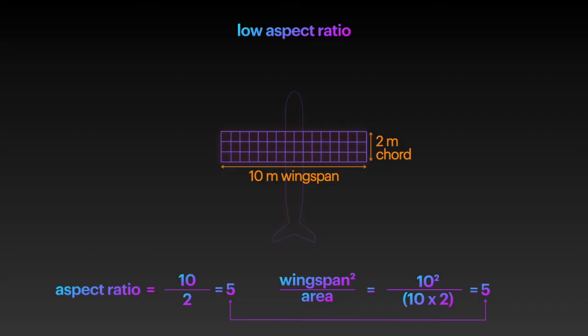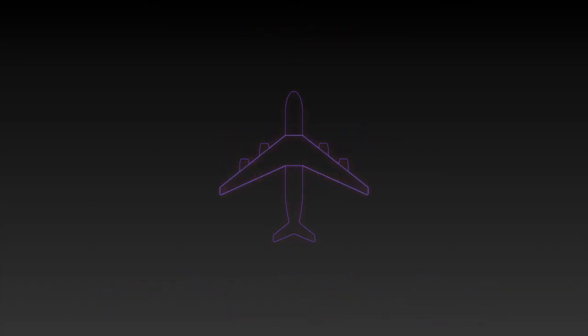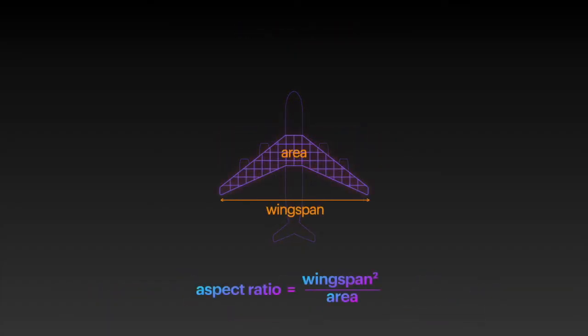Please note that the wing area in this formula is not the upper and lower surface area of the wing. The value for the wing area is the area of its shape as viewed from above. This version of the formula is particularly useful when calculating the aspect ratio of a wing that is not rectangular, such as this swept back airliner wing.